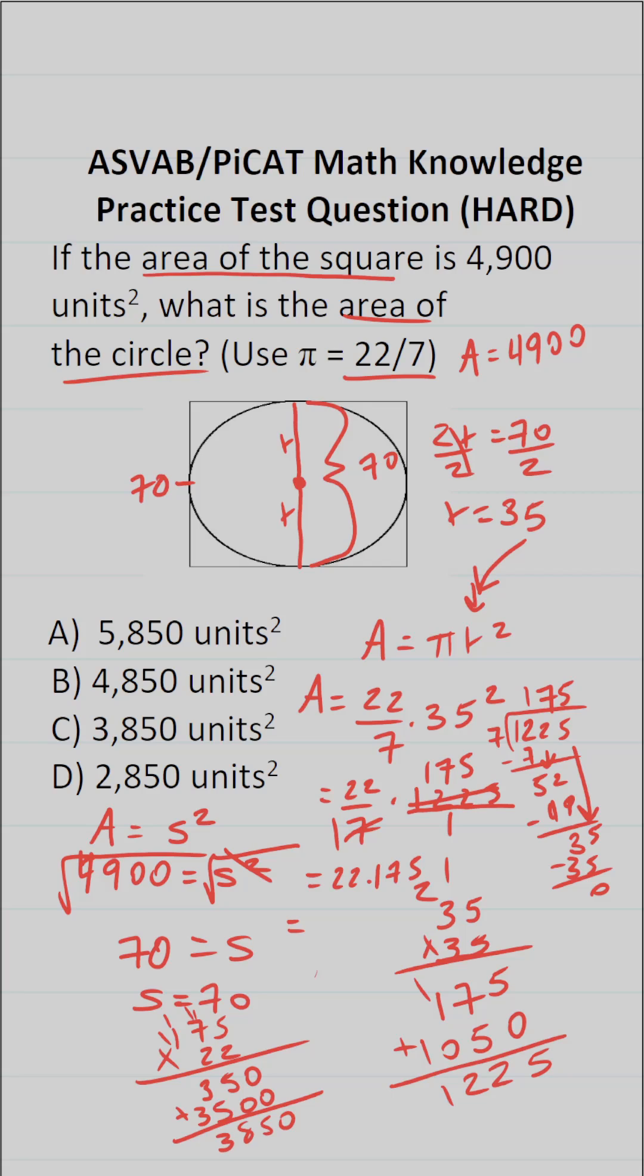So we can see that the area of this circle is going to be 3,850 square units, which is answer choice C, of course.